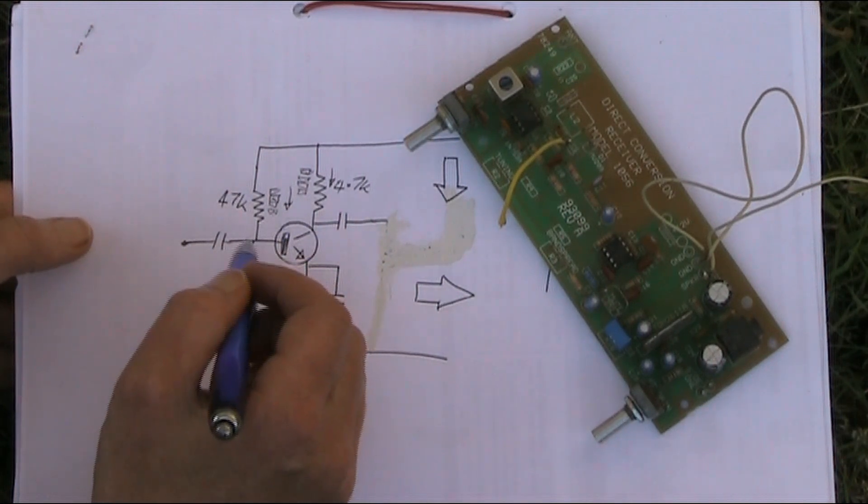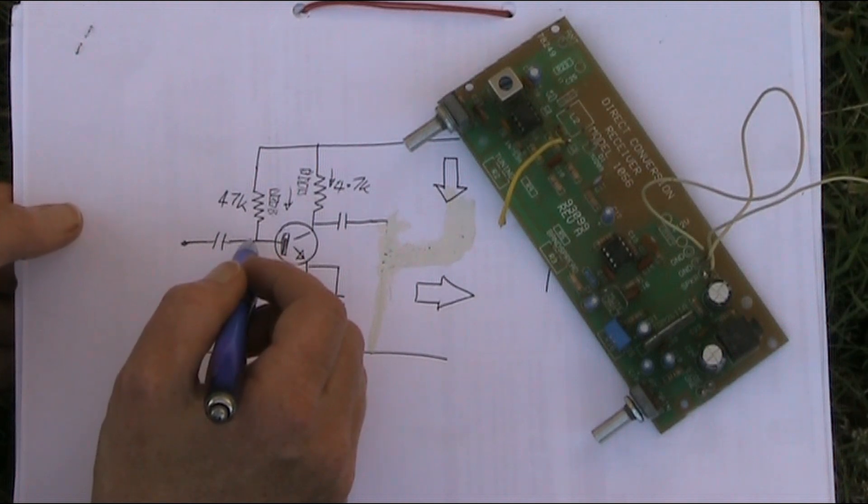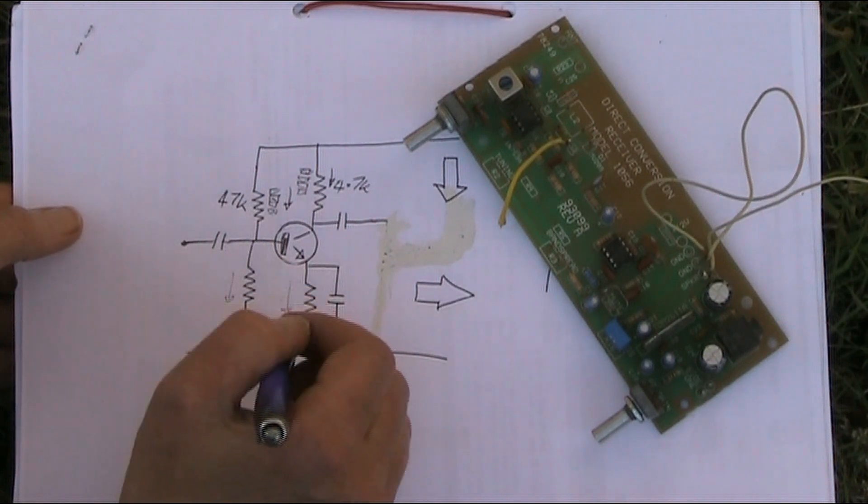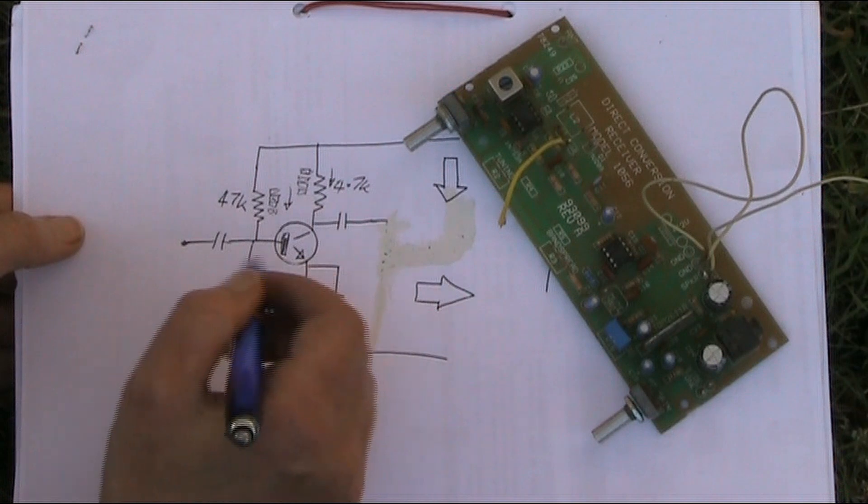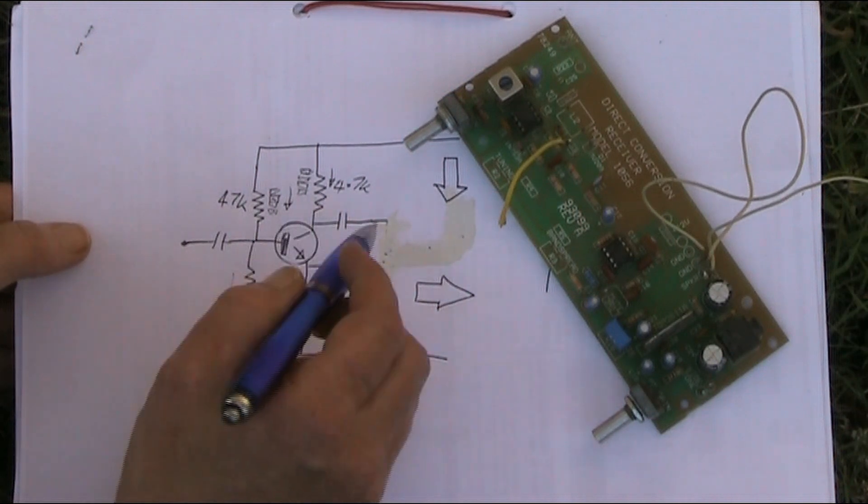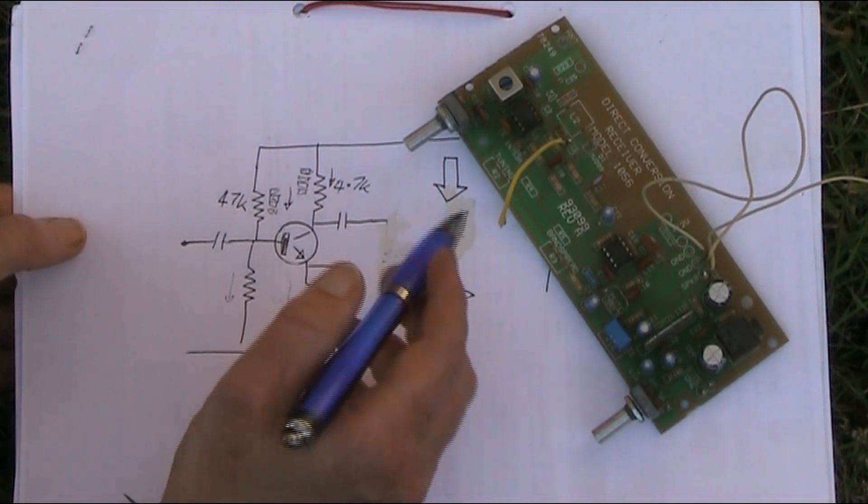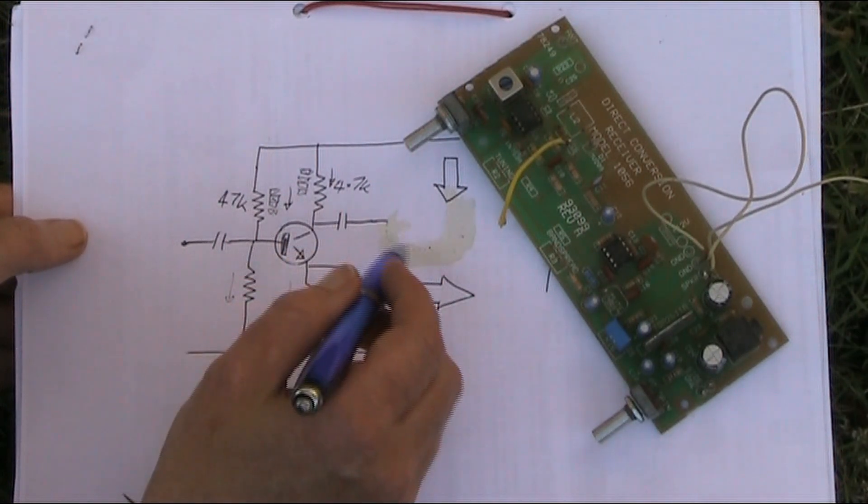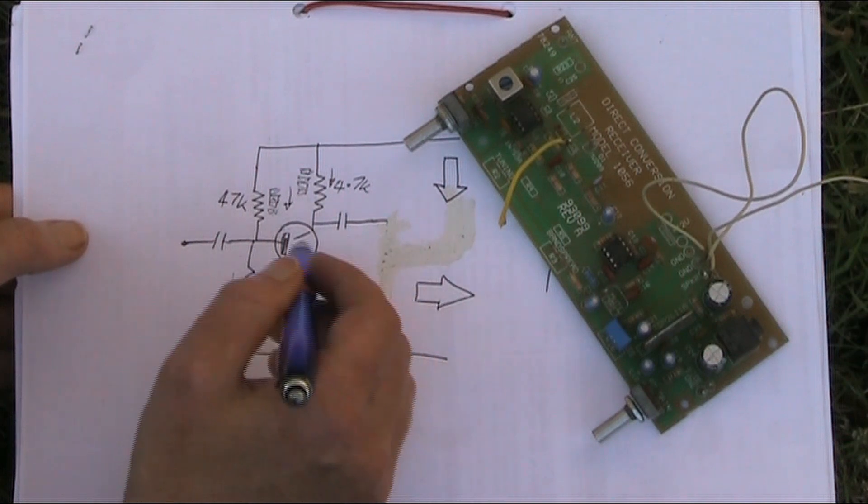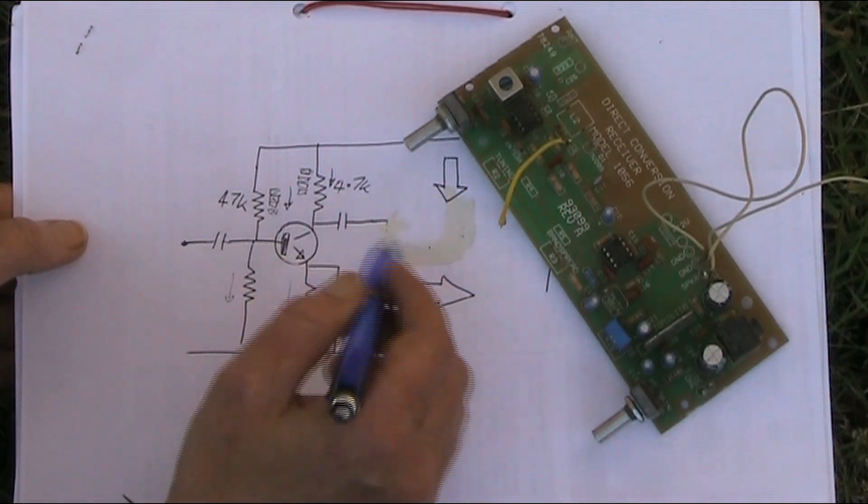And then you'll get a rough idea as to where the current flows when you're fault-finding. Another possibility is if the resistor's left to right, depending on their role, you might either do them from higher voltage to lower voltage, or maybe even following the signal path.